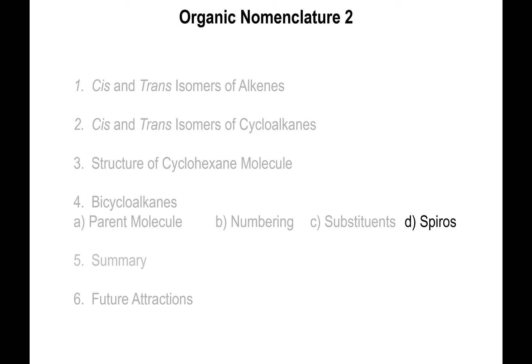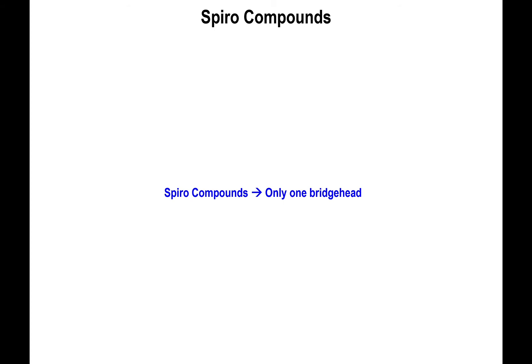Time to talk about spiro compounds. Spiro compounds are those that only have a single bridge head, and they have a resemblance to the bicycloalkanes, but there are some major differences in the way we name them. You still count what's to the left and right of that bridge head — two carbons to the left, two carbons to the right — so you input those numbers 2,2 inside the brackets, preceded by the word spiro. Adding 2 plus 2 plus 1 bridge head gives five carbons total, so this is spiropentane.